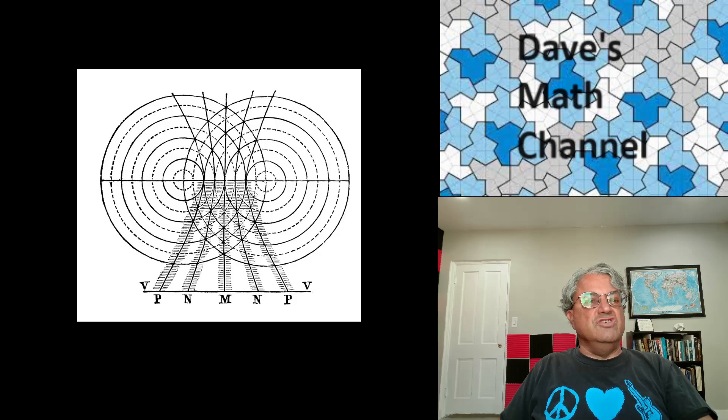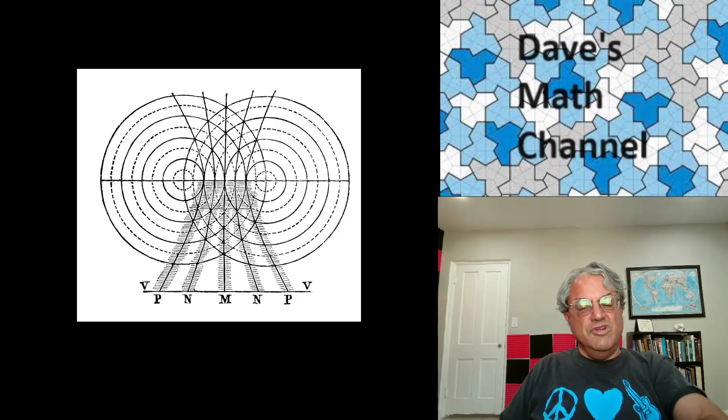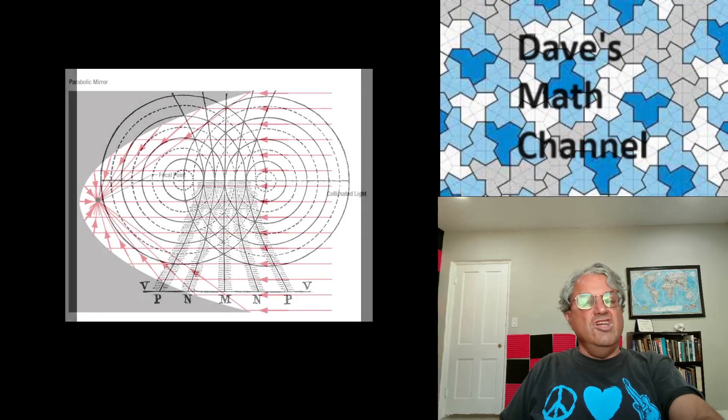And the reason they're hyperbolas is because the difference of the distances between the two sources has to be constant. It has to be, in the case of constructive interference, the difference of the distances has to be an integral multiple of the wavelength. We're assuming these both of these waves have the same wavelength. And if it's destructive interference, that means that the difference of the distance has to be like n plus a half times lambda, where n is an integer. So it's a half a wavelength difference. The crest of one wave has to meet the trough of the other wave. So, that's where you get hyperbolas.